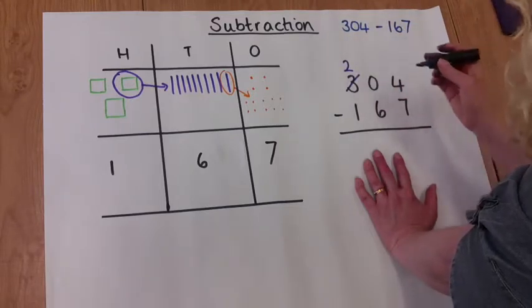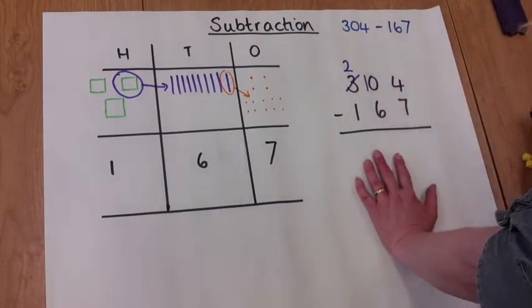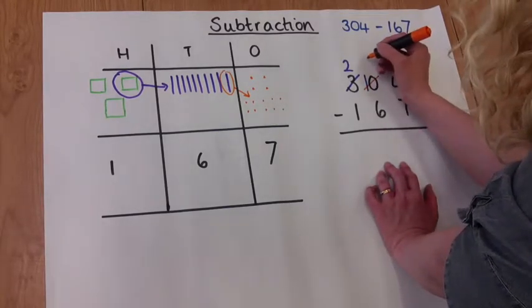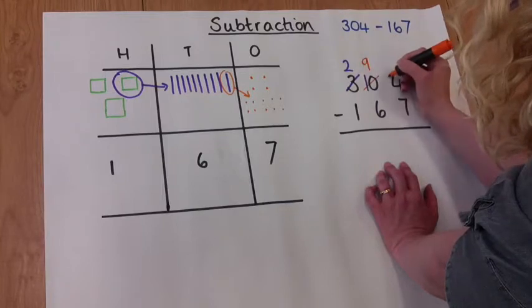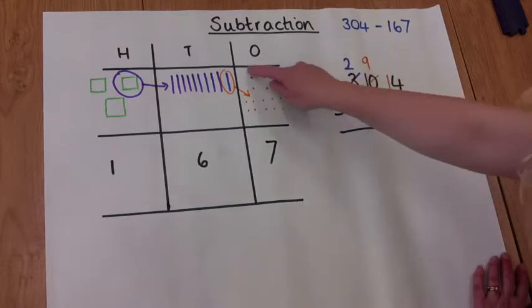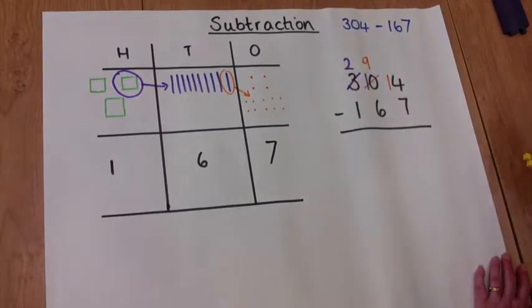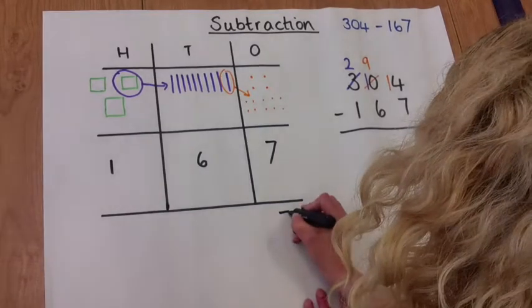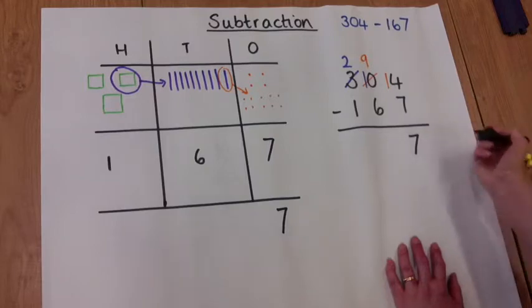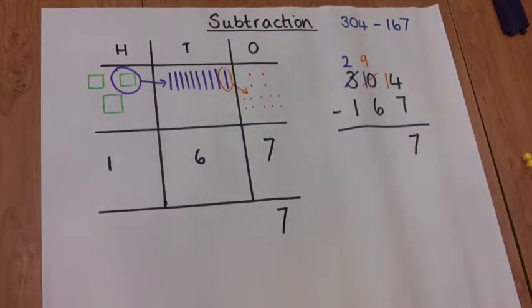So now we show on the abstract method: regroup 100 into ten tens. Regroup one of those tens, which will leave us with nine tens in the tens column, into ten ones, which means there's now 14 ones in the ones column. We need to subtract seven of those. 14 take away seven is seven. Those children that are confident with their number facts will see that, or they can cross out seven ones and see that there's seven remaining in the ones column on the pictorial method.